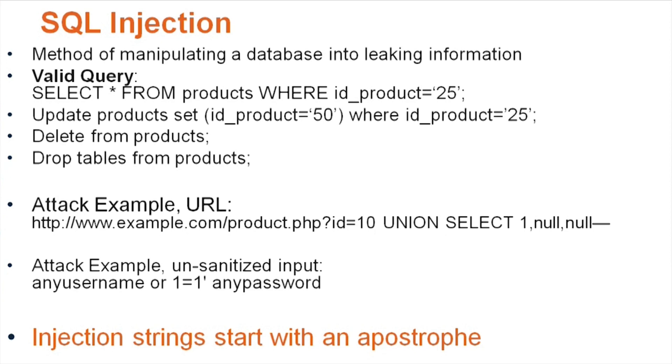So an attack example URL. So you have a URL that's taking parameters from the website via a get method. ID equals 10, union select one comma null null with the two hyphens at the end, which is a comment.